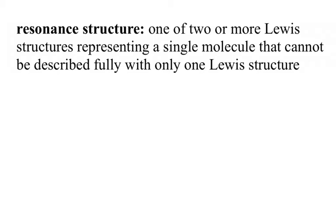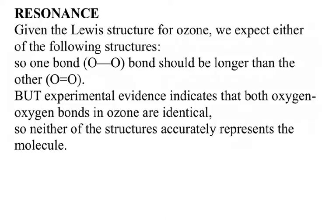We're going to look at an example using ozone, which is O3, and we're going to show you that this example has resonance. If you look at the Lewis dot structure for ozone, you're going to see that one side will have a single bond and the other side will have a double bond.